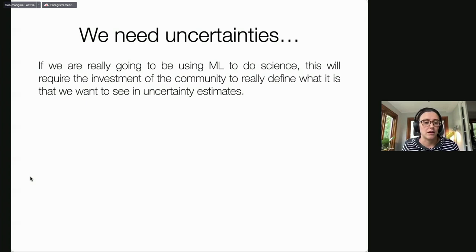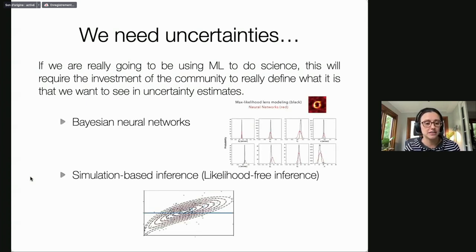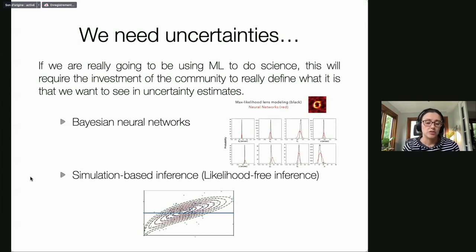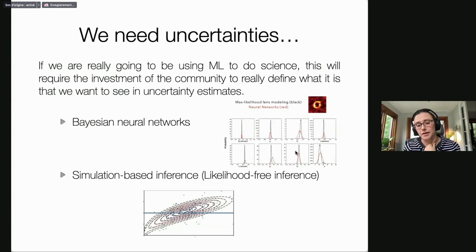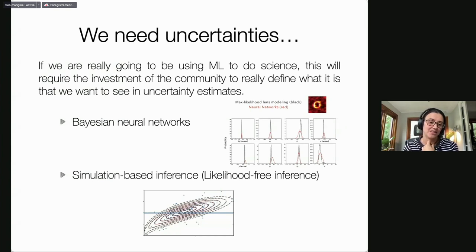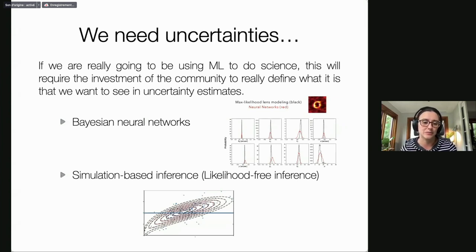Two examples of methods that allow uncertainty quantification: Bayesian neural networks and approximate Bayesian neural networks done using variational inference. Another example of a machine learning-based method that allows uncertainty quantification is likelihood-free inference, now more commonly called simulation-based inference. There needs to be real investment from the community to define what uncertainties we want to see from machine learning methods — the answer may be problem-dependent, since some problems may need only less accurate uncertainties while others definitely need the best calibrated uncertainties.